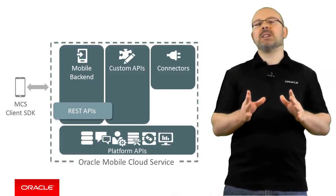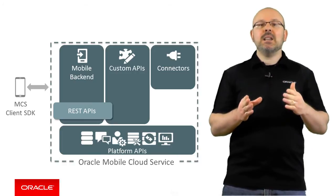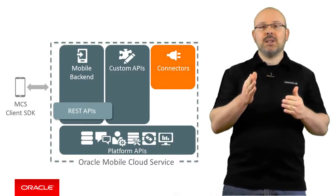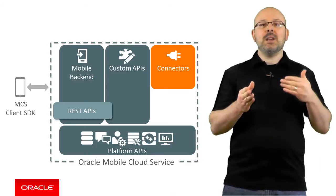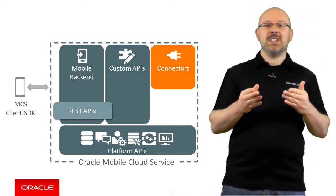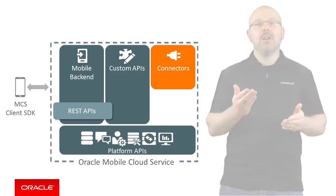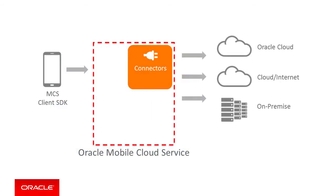The most visible consequence of that design decision can be seen in the MCS SDKs and in the connector APIs. If you are using the SDK, the code you will write to authenticate against MCS will stay the same even if you switch from one authentication technology to another. You only need to adjust the application's MCS configuration file. On the other hand, connector APIs are secured through the application of a security policy. Switching one authentication technology for another simply means that you need to apply and configure a different security policy. The rest of the connector definition will stay the same and there should be little to no impact on the custom APIs consuming the connector.